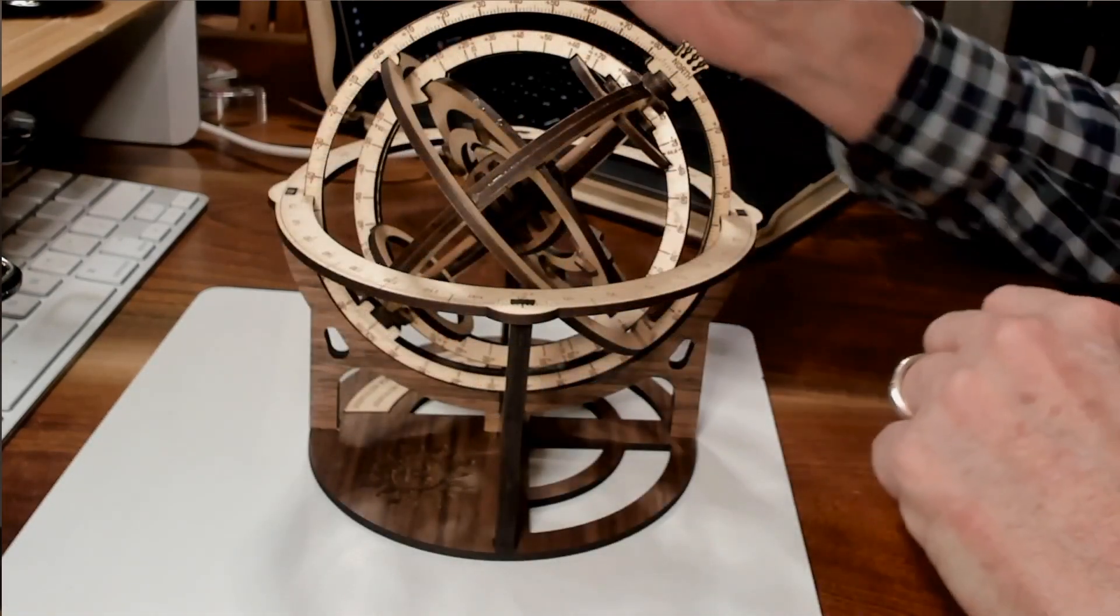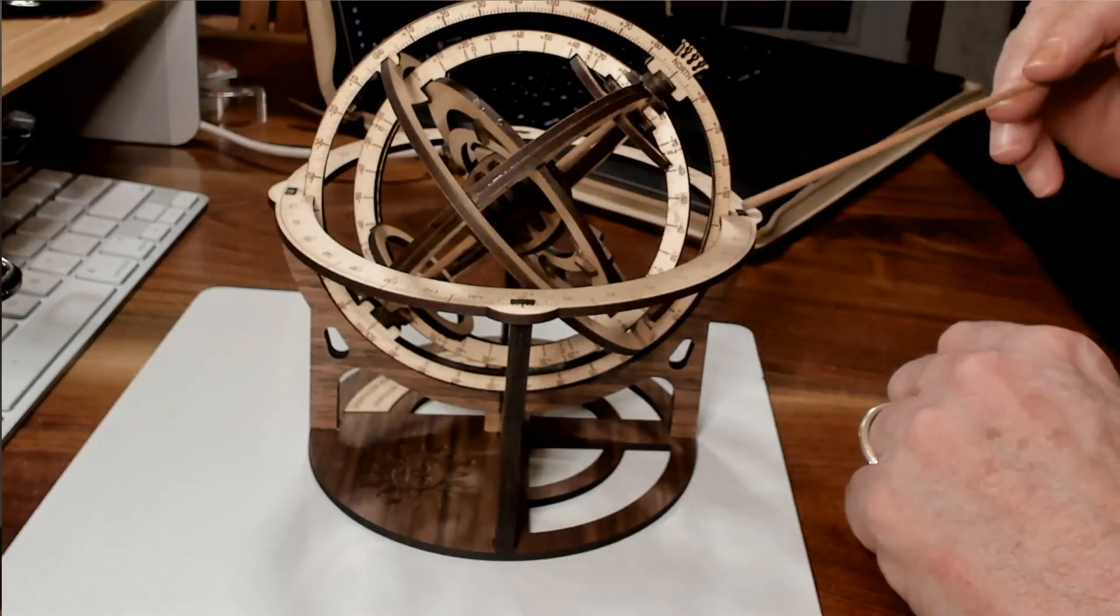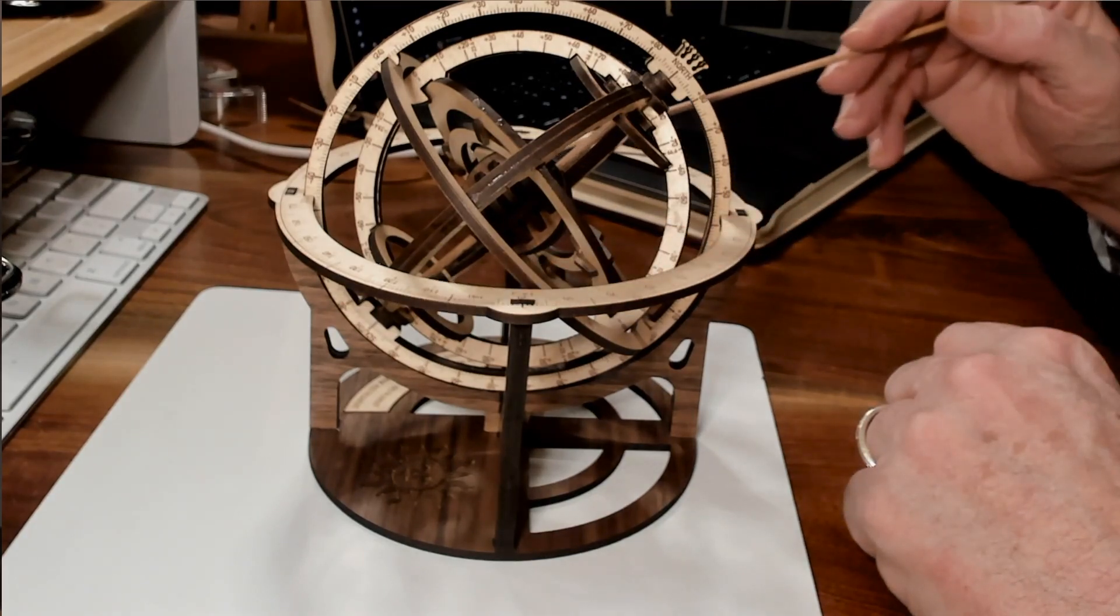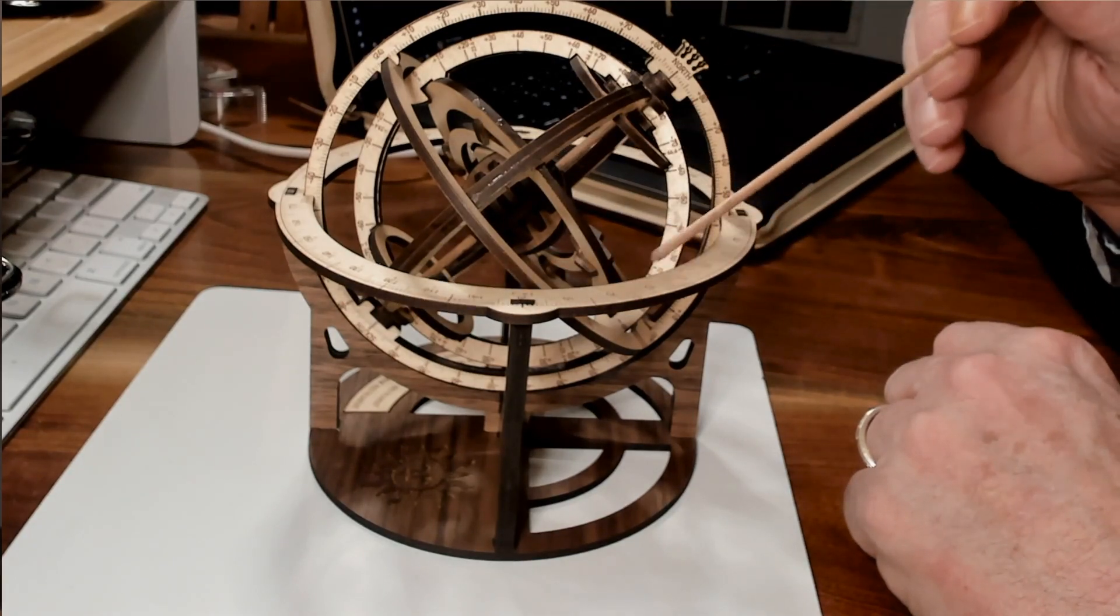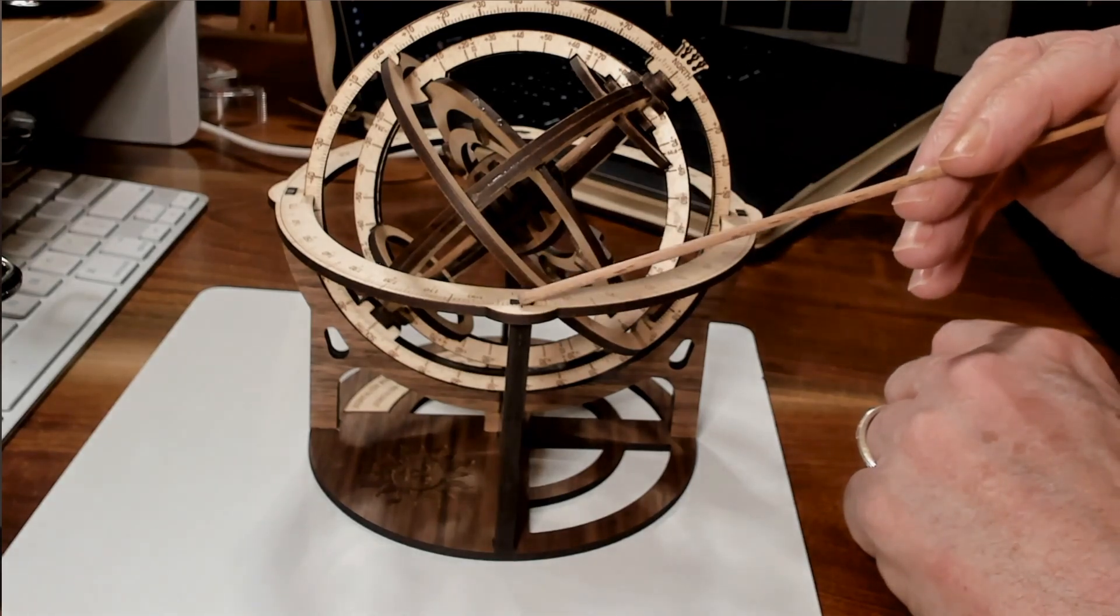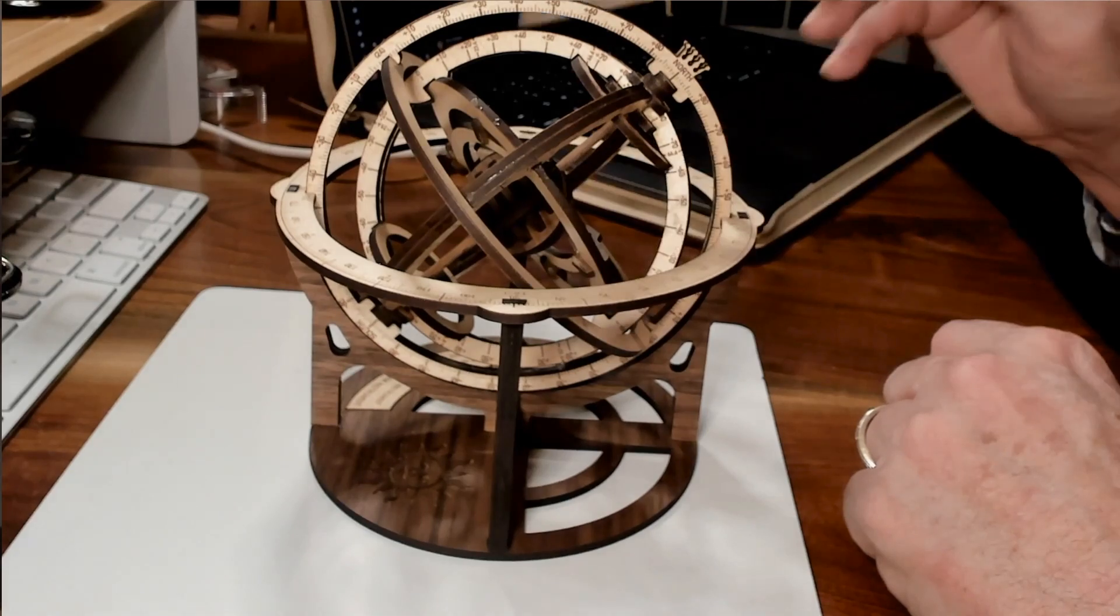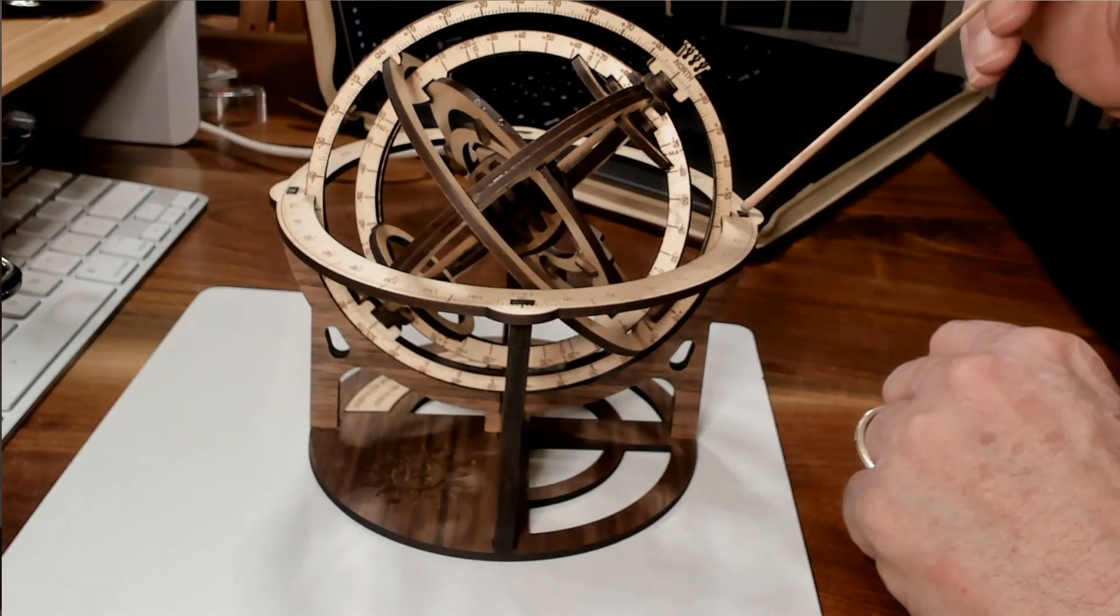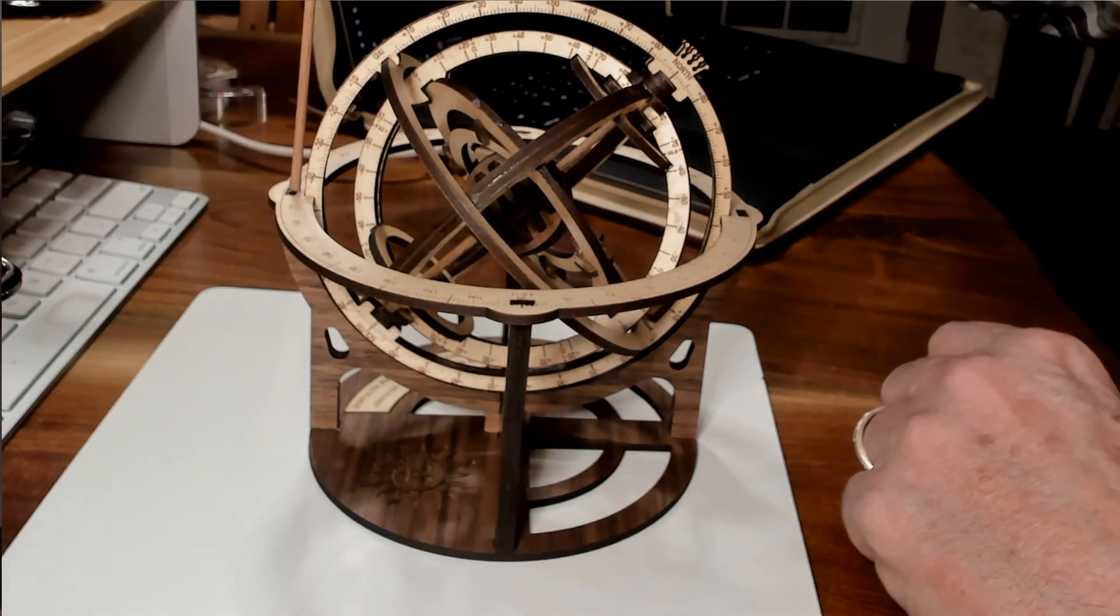Now let's identify the parts. This outer ring will be our horizon, and on the ring it has azimuths. So east would be located here at 90 degrees. On the opposite side we have west. This is north at zero degrees, and this is south at 180 degrees.